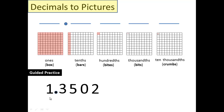Time to try one on your own: 1.3502. This is the point in time where you would pause the tape. Go ahead and fill out what you think that looks like on your 100 grids, and we'll check back in in a minute. So press pause, go ahead and try it, and we'll see how you do.